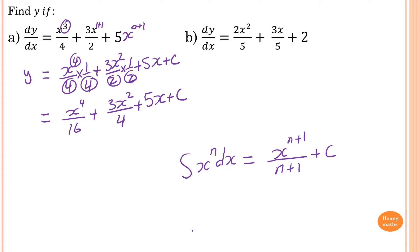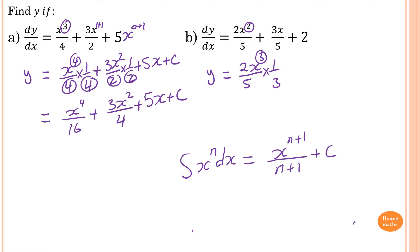To do this, the same rule applies, so y is equal to — so power of 2, we add 1, so power of 3. So, 2x to the power of 3, divided by 5, times by 3. Or you can write, if you're not sure, you can times by one third, because dividing by 3 is just like times by a third. Add 3 — now this is part 1 — so add 1 to this, so x squared, divided by 5, times by 2.